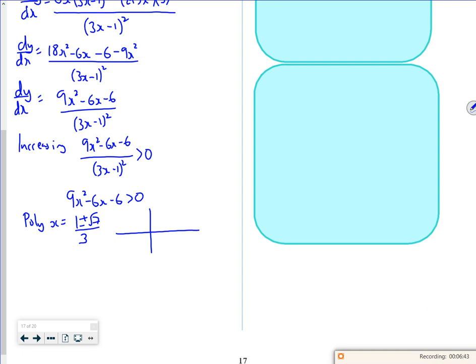So root 7 is 2 and a bit isn't it? There's going to be a negative root and a positive root. So that would be 1 minus root 7 over 3, and that would be 1 plus root 7 over 3. I want to look where the graph is above, so I'm looking at these bits here.